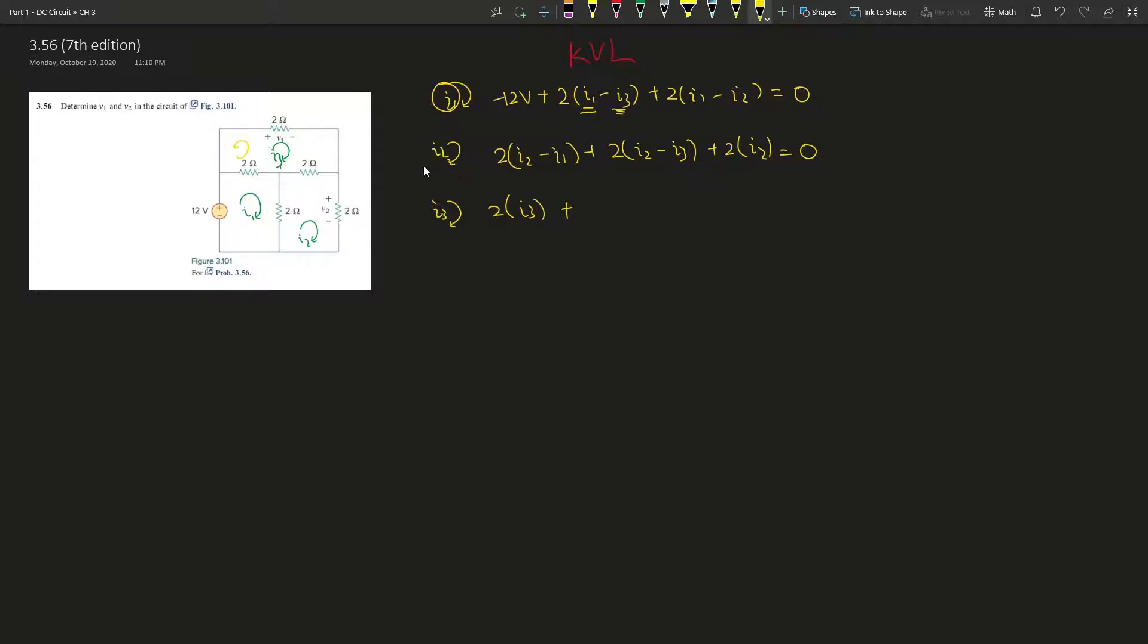And then i3 over here, which is 2 ohms. i3 plus, I started this one, and then going this way. So now and then it's 2 ohms (i3 minus i2) plus 2 ohms (i3 minus i1). Okay, now it's time to simplify.